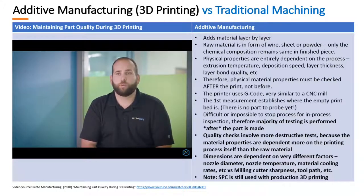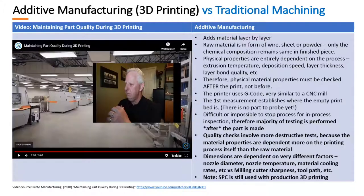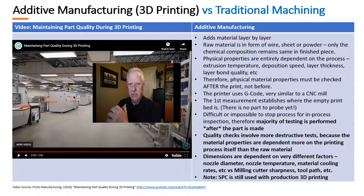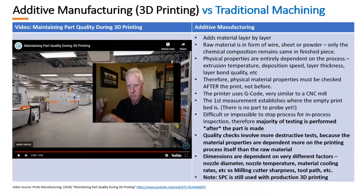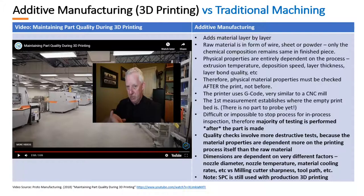They also verify any other dimensional requirements requested by customers, ensuring overall quality meets their standards at Protolabs. In 3D printing, from my experience and the technologies I've reviewed, it would be very difficult to do in-process inspection — it's very challenging to stop a process mid-print, take measurements or do substantial checking, and then restart. It's not impossible, just more challenging than in traditional machining, so there is much less reliance on in-process inspection.